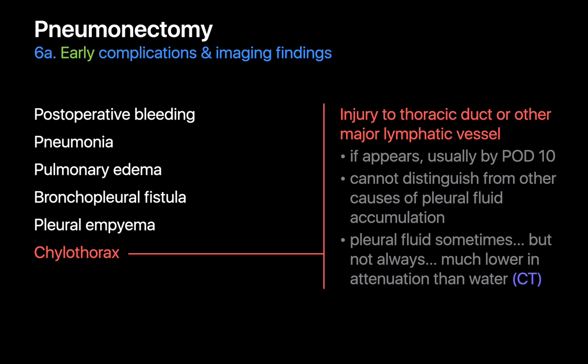Chylothoraces resulting from lymphatic fluid leaking into the post-pneumonectomy space from an injured thoracic duct or lymphatic vessel may be recognized as far out as 10 days post-pneumonectomy. On chest x-ray we can't distinguish a chylothorax from other causes of pleural fluid accumulation. However, on chest CT, chylothoraces that are particularly lipid-rich can manifest as pleural fluid accumulation with attenuation much lower than water.